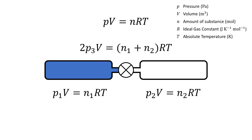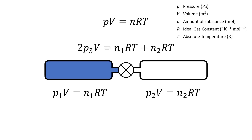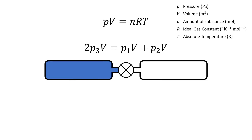It follows that our expression for the final state is then 2 times P3 times volume equal to the sum of N1 and N2 multiplied by the ideal gas constant and temperature. Expanding out: 2P3V equals N1RT plus N2RT. On the right-hand side, N1RT and N2RT are equal to P1V and P2V respectively. So the Vs cancel out and we rearrange.